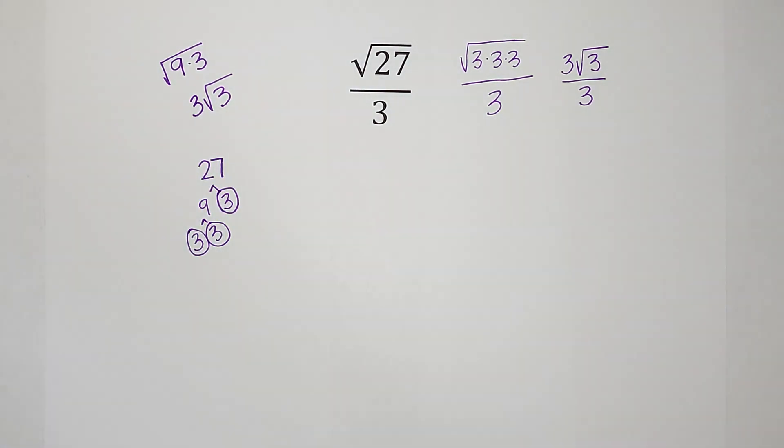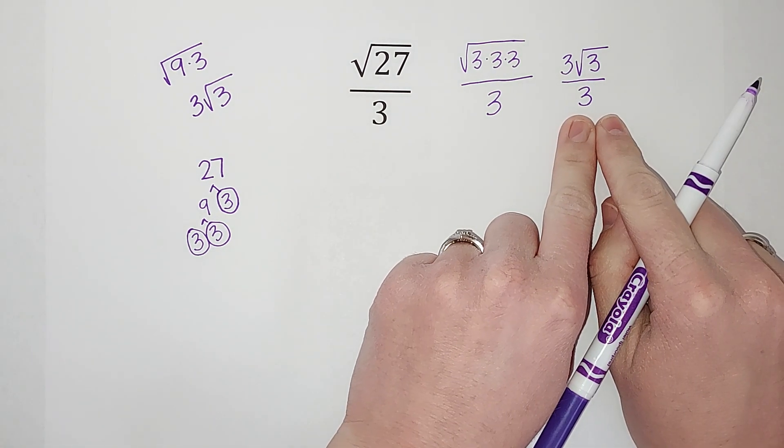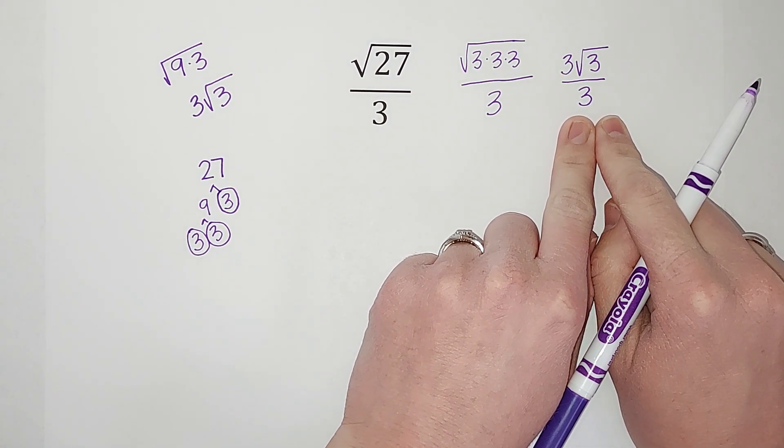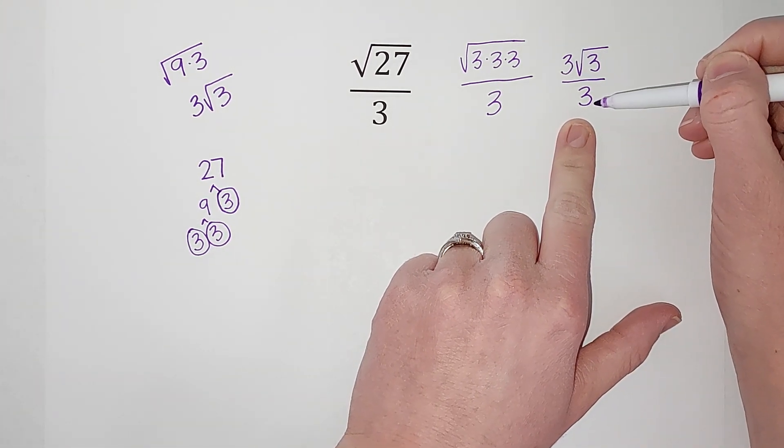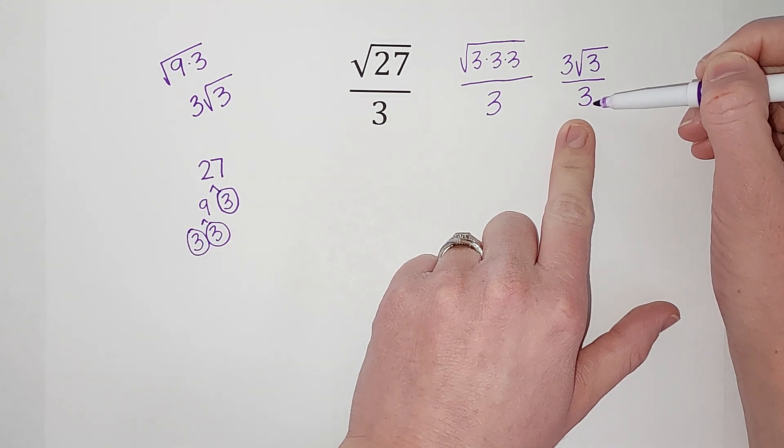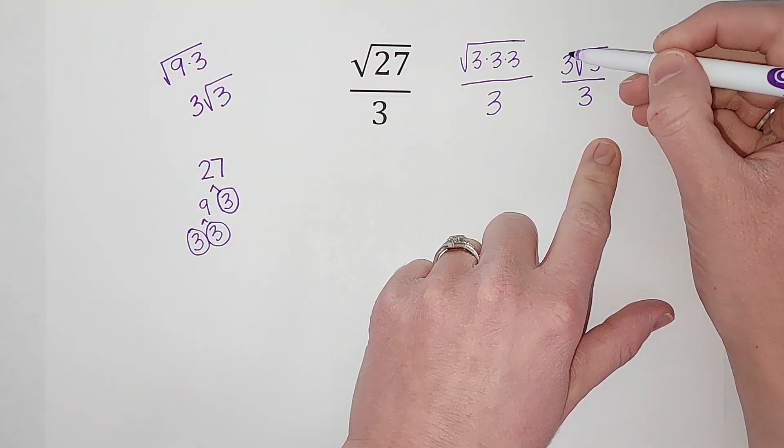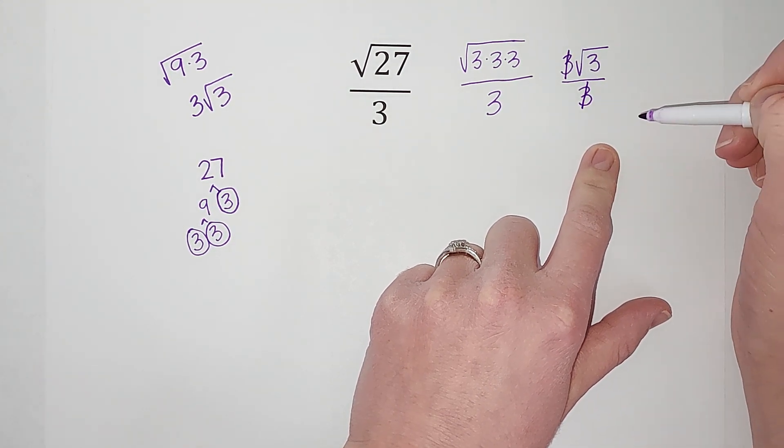All right, so now I have 3 square roots of 3 over 3. That's a lot of 3s. So whenever I have something over itself, it just reduces down to a 1. 3 goes into 3 once, so these actually cancel with each other.